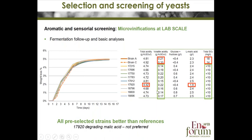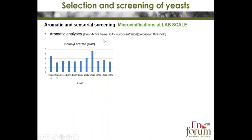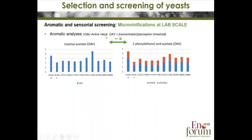Aromatic analysis was carried out to evaluate the impact of yeast on the aromatic and sensorial quality of wine. This table shows odor activity values (OAV) — not concentrations but odor-active values. Strains show very different capacities to produce aromatic compounds. A good correlation was found between the data obtained with isoamyl acetate and 2-phenylethanol acetate — strains that produce high levels of isoamyl acetate also produce high levels of 2-phenylethanol acetate.